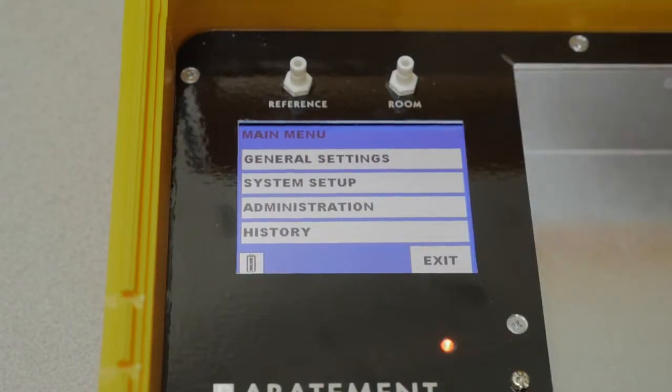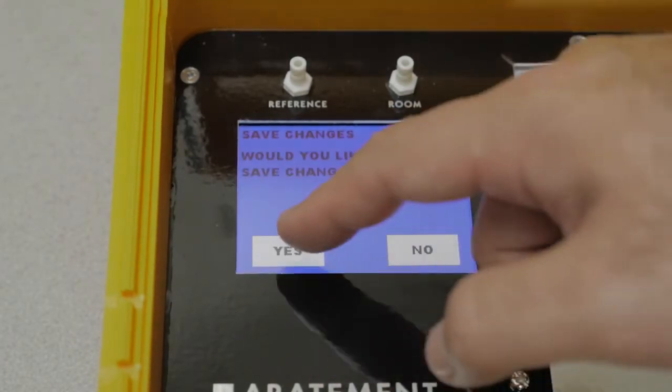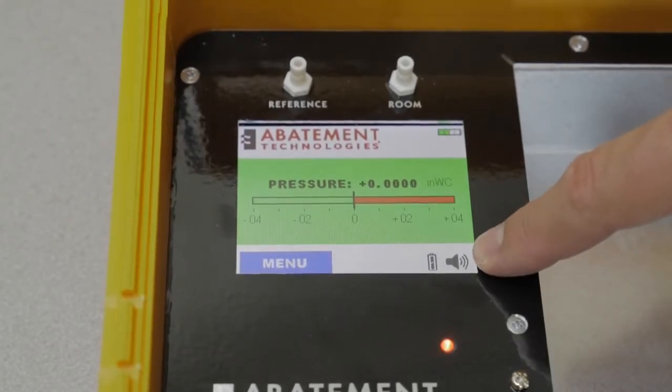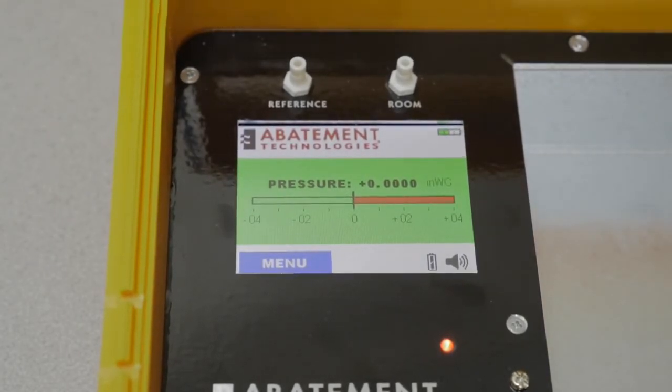When the monitor is running on battery, the screen will turn off, but the data readings will continue. The audio icon on the screen will tell you whether the audio alarm is on or off.